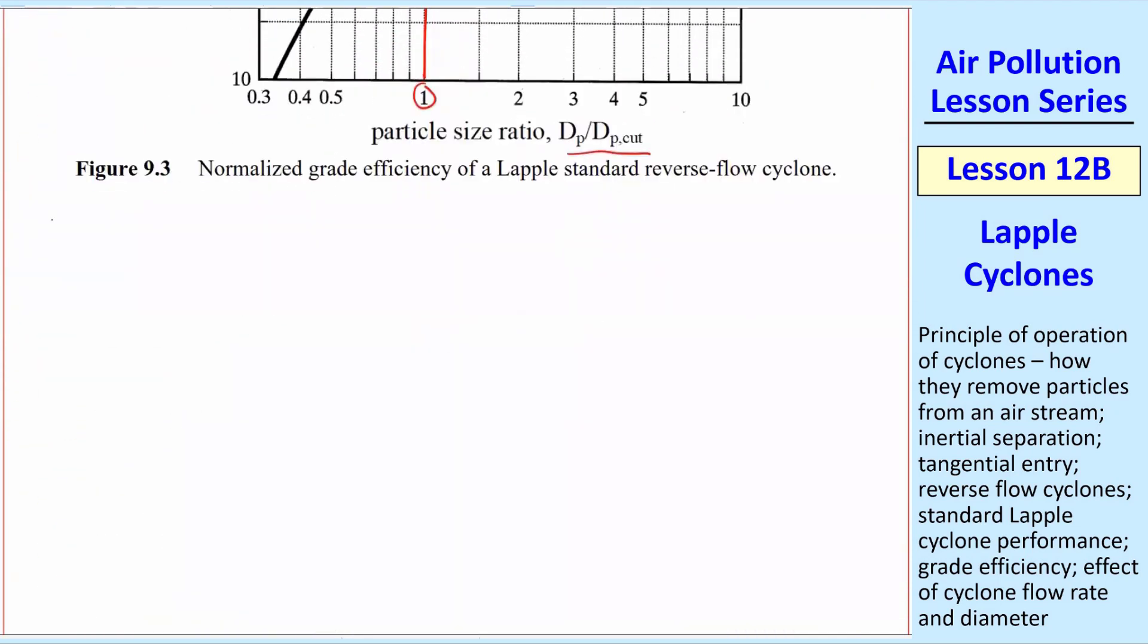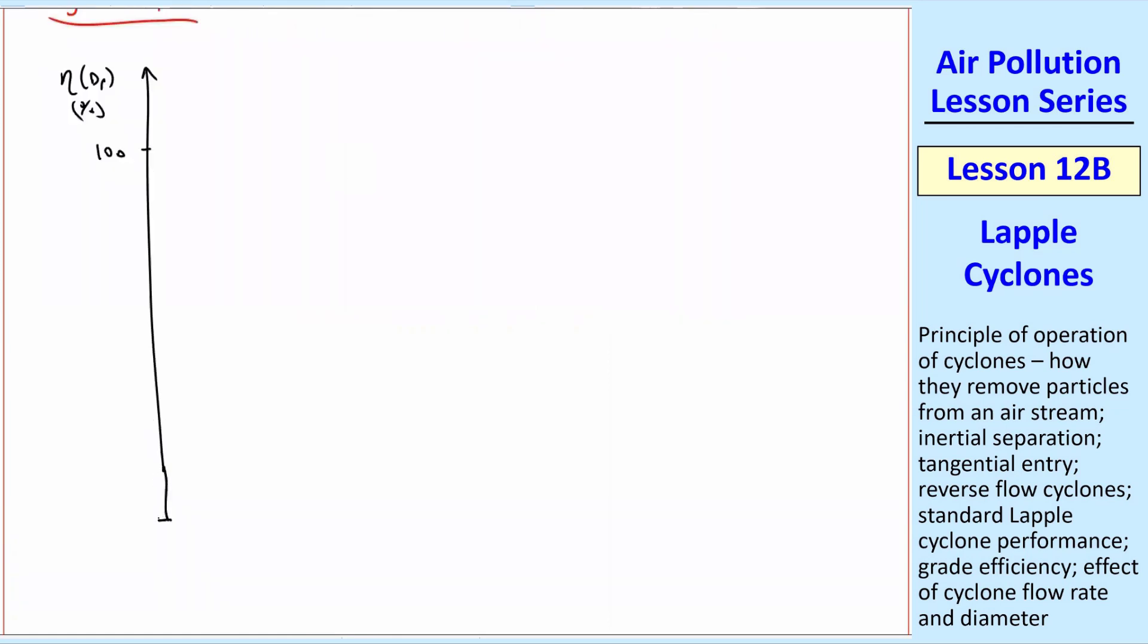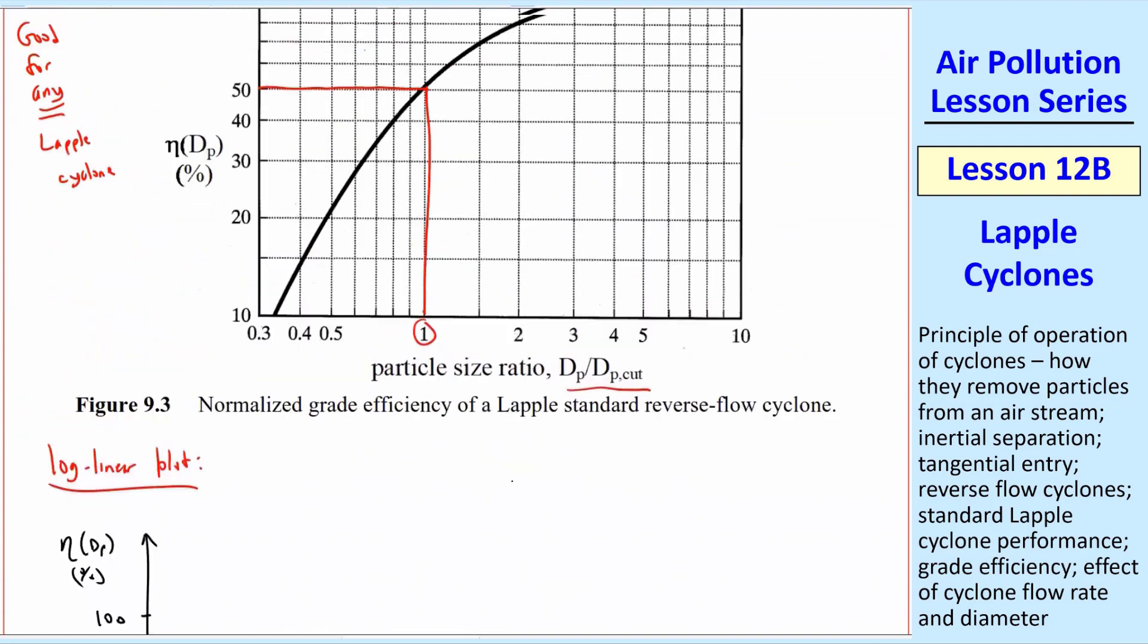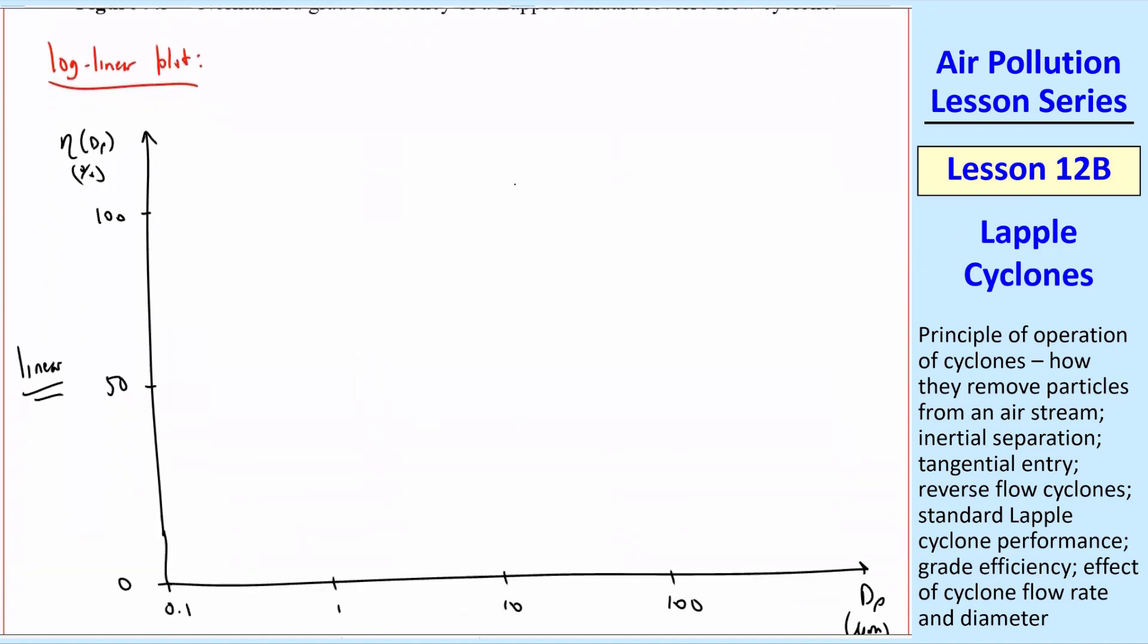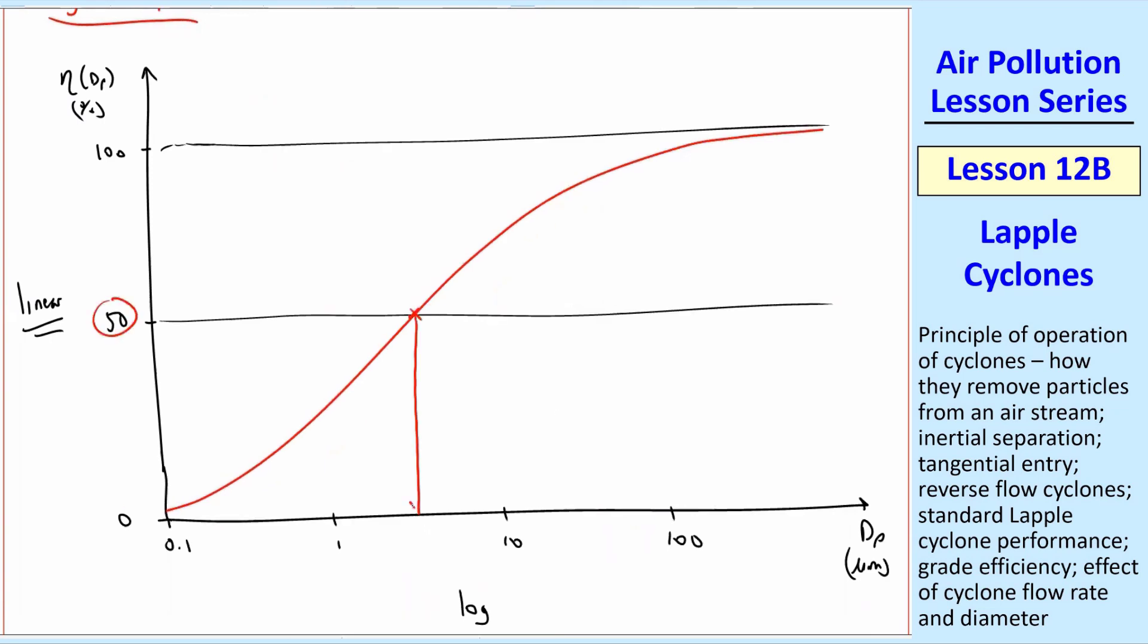It's more standard to plot on a log-linear plot instead. And so you have your grade efficiency, eta_DP as a percent, and this goes from 0 to 100. And it's a linear scale, so we make this one linear. And then our DP in microns, we typically make that one the log scale. And when you take this equation and you plot it on a log scale, you would get our typical S kind of curve. It doesn't ever go to 0 on this log scale, but it'll do something like this, asymptote to 100, but it theoretically never gets there. The 50% case, you come down, and this is your DP_cut. This is our typical S curve that we've seen before for other air pollution control devices.